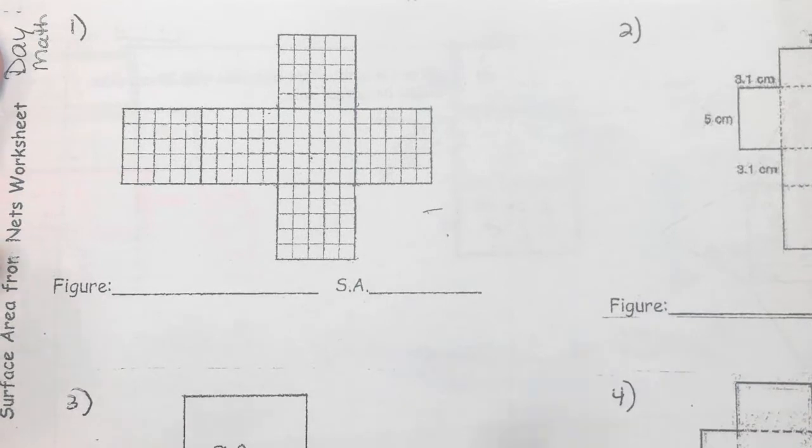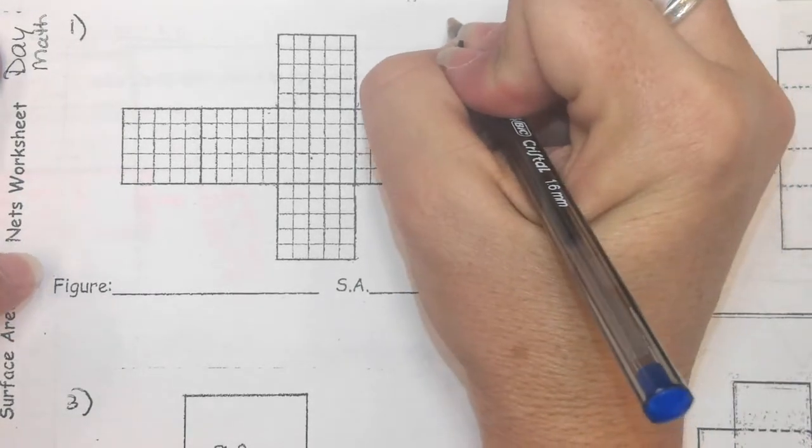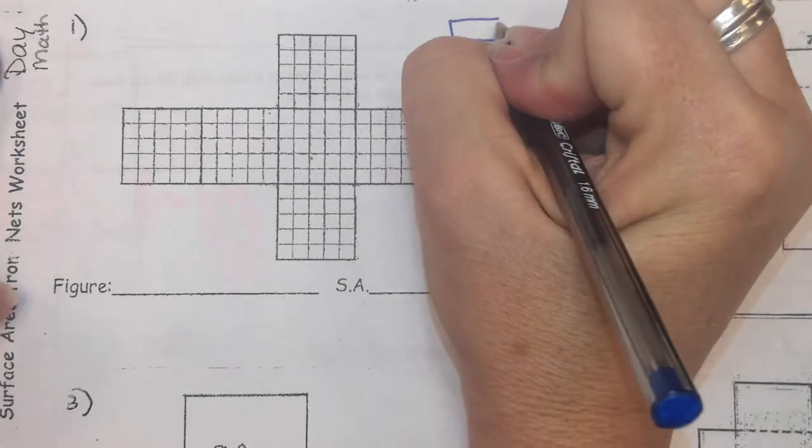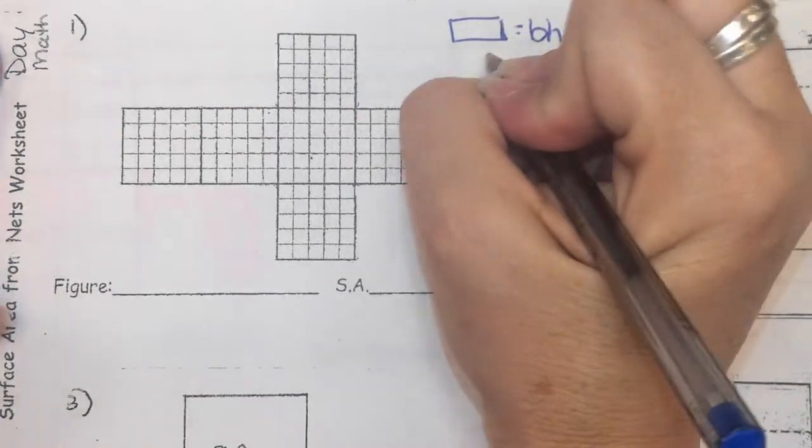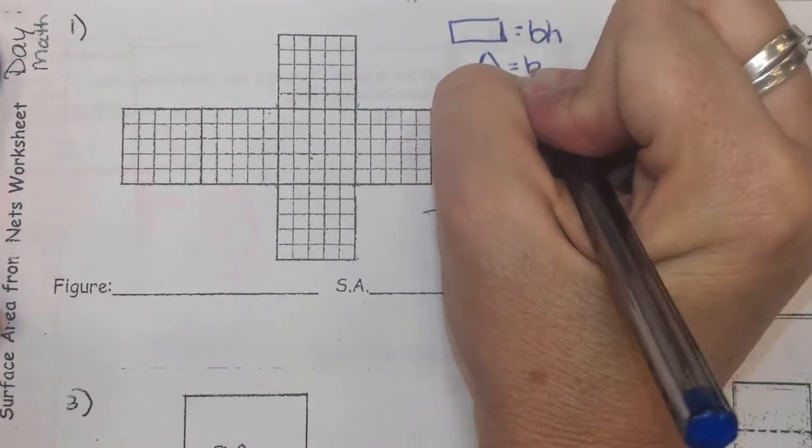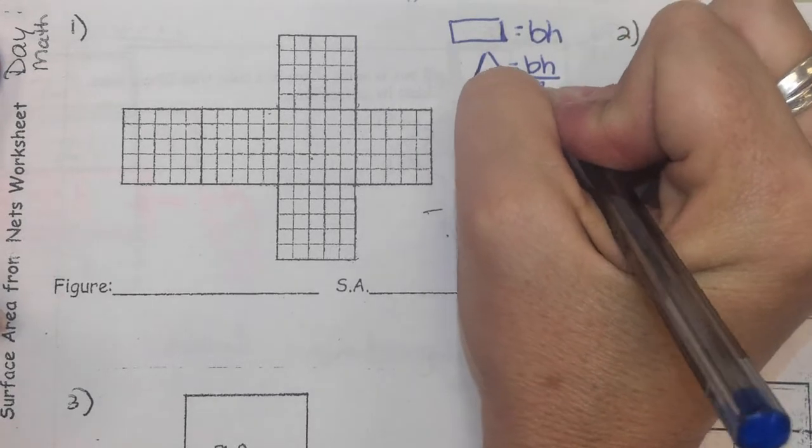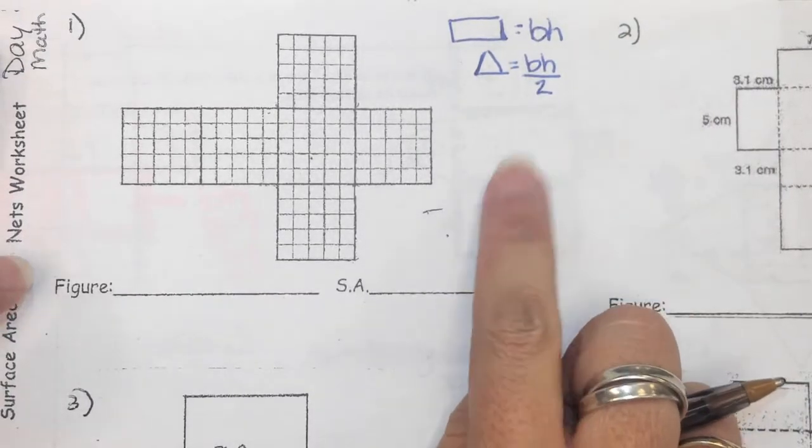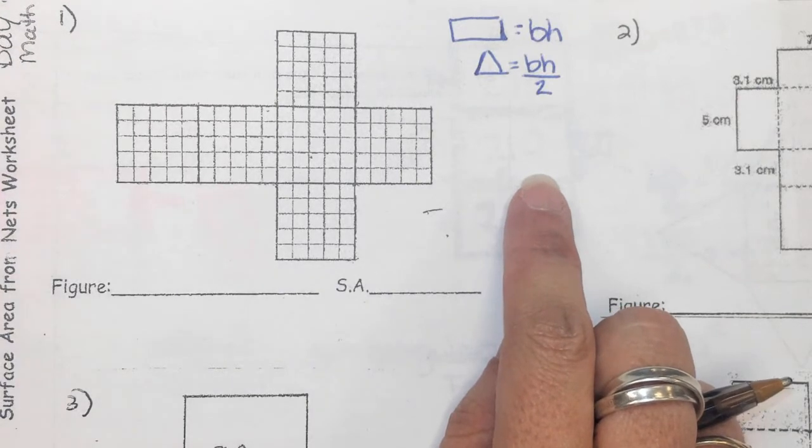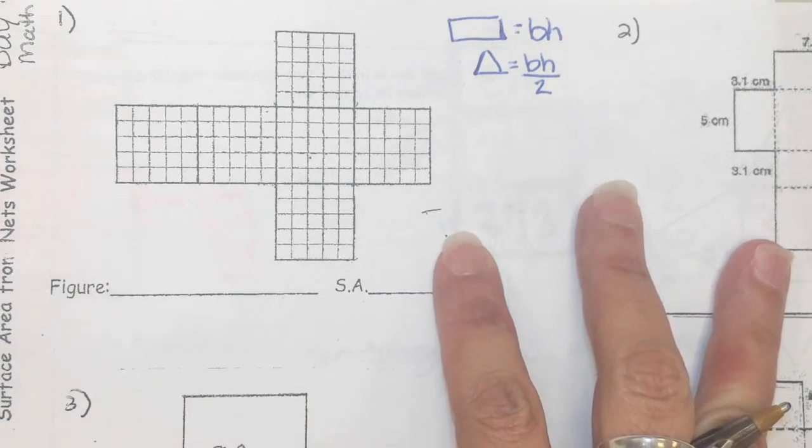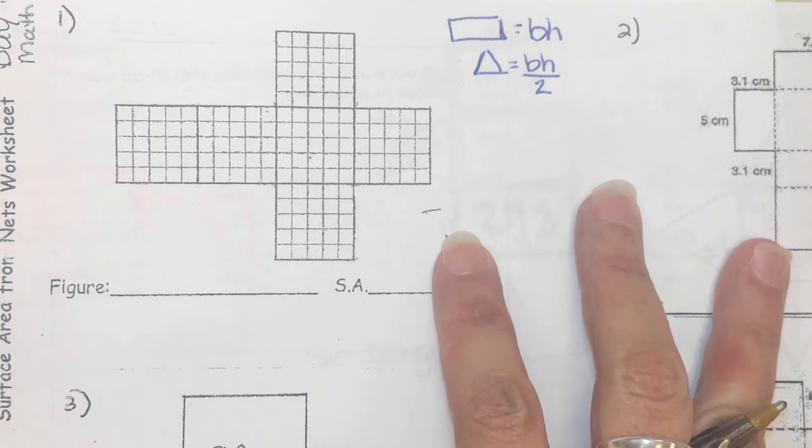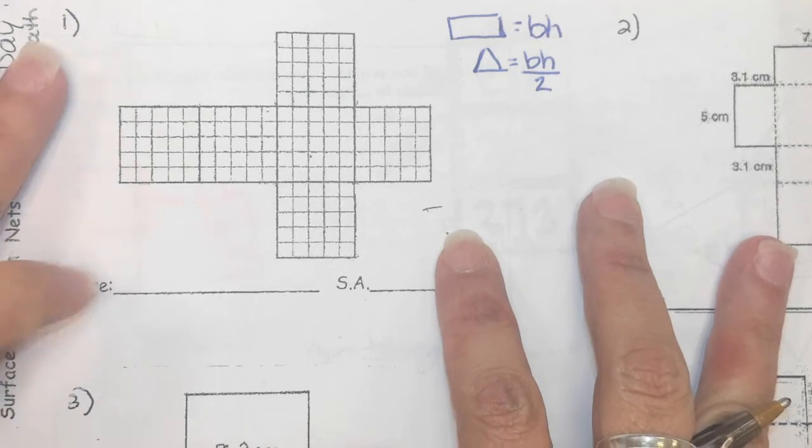The two formulas you're going to need for 6th grade for surface area is going to be an area of a rectangle or a square, which is base times height, and the area of a triangle, which is base times height divided by 2. Friday's 100 point test will have on it volume, which is from Monday, and all this surface area stuff, which we're continuing to practice.